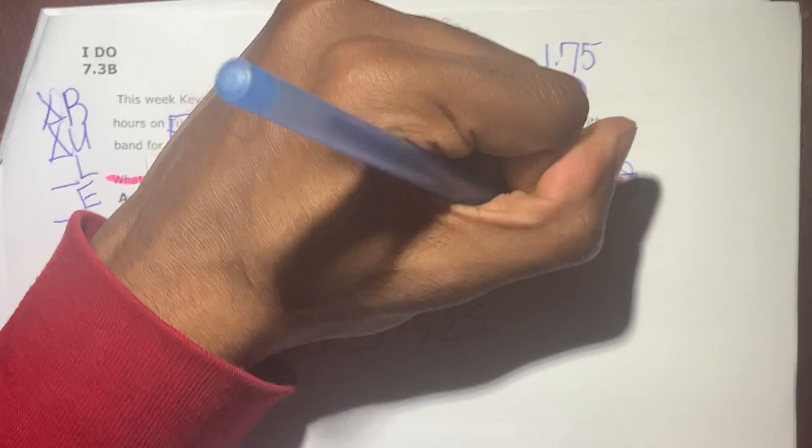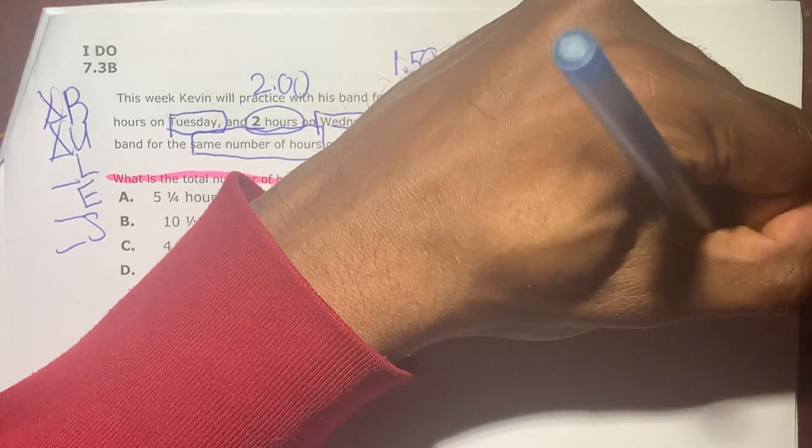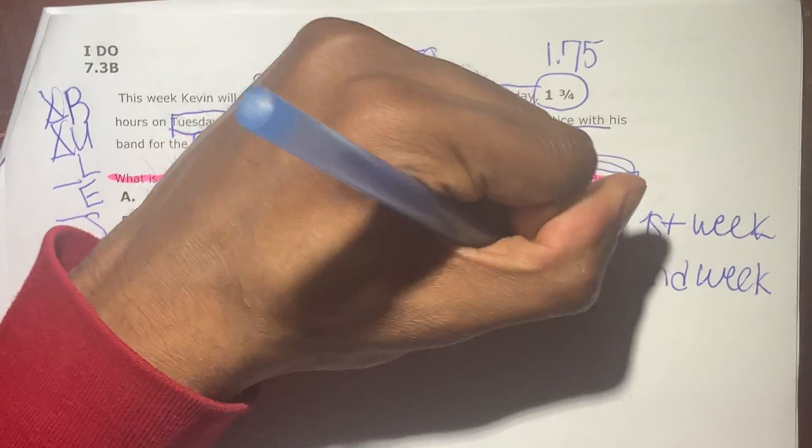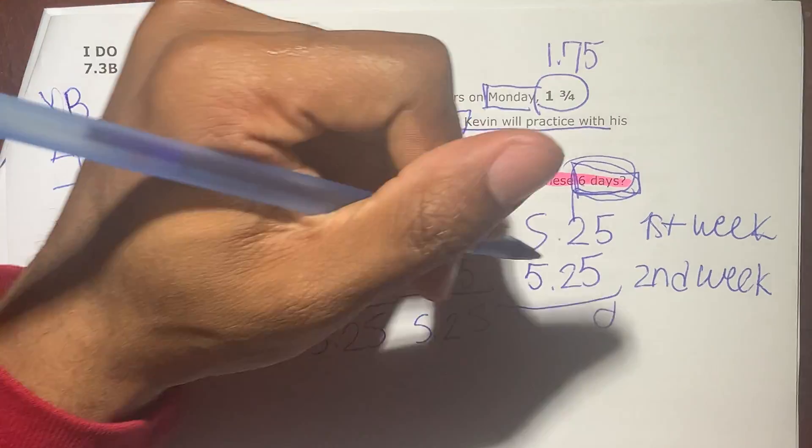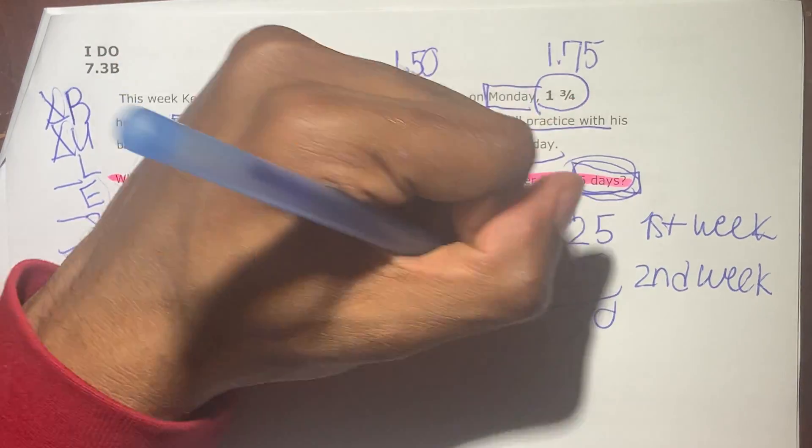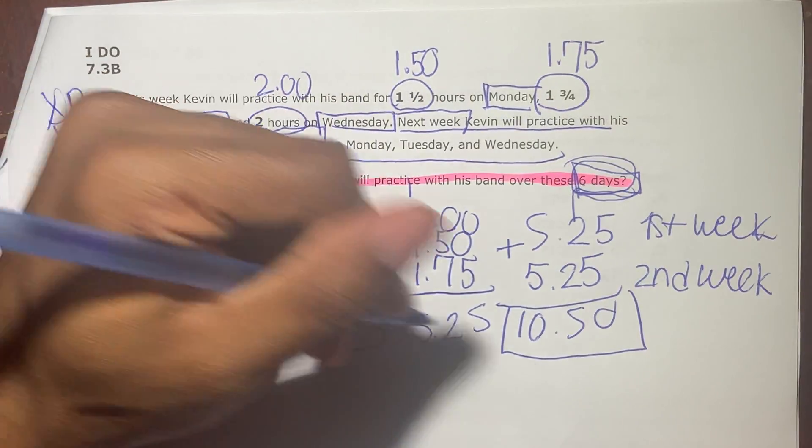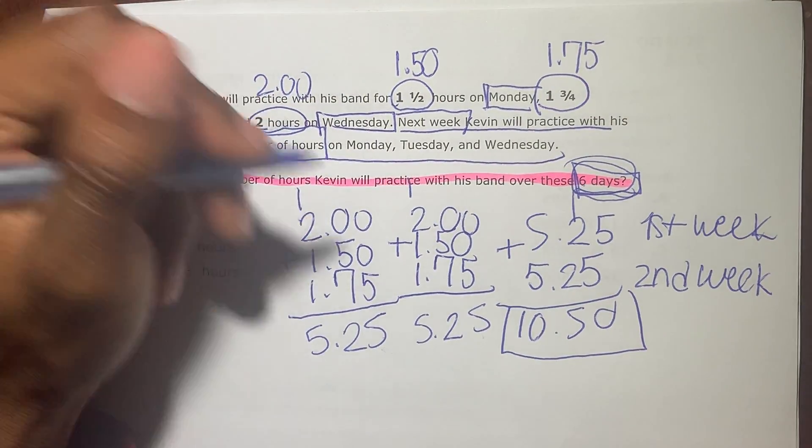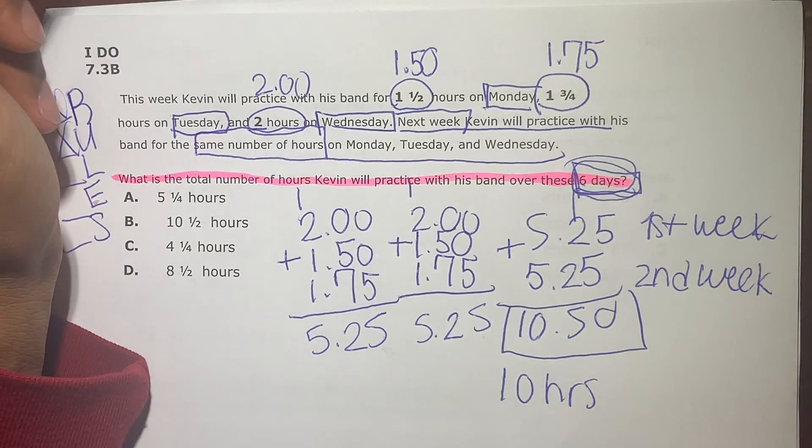So 5.25 for the first week. First week. And then the second week Kevin practiced for the same amount of time. We add these up. 5 plus 5 is 10. Carry the 1. 1 plus 2 is 3. Plus 2 is 5. 5 plus 5 is 10. So we have 10 hours and 50, or 10 and a half hours, which would be 10 hours. And how many minutes do you think that would be?